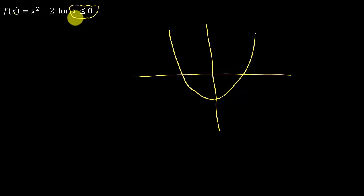So notice this says for x ≤ 0. So what that means is that we're restricting the domain on this function. We're only using x values from 0 back to negative infinity. So we're not using this part of the graph.